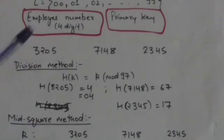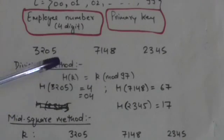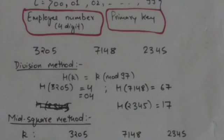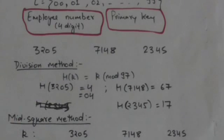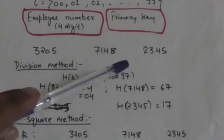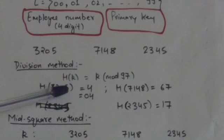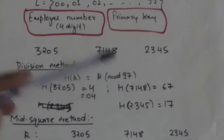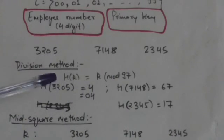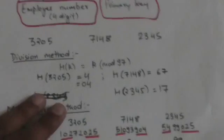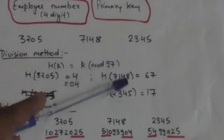First is the division method. We choose the prime number 97, so the hash function h is defined by h(k) = k mod 97, where k is the key. This means k will be divided by 97 and the remainder is the output. For example, h(3205): when 3205 is divided by 97, the remainder is 4, so the hash address is 04.